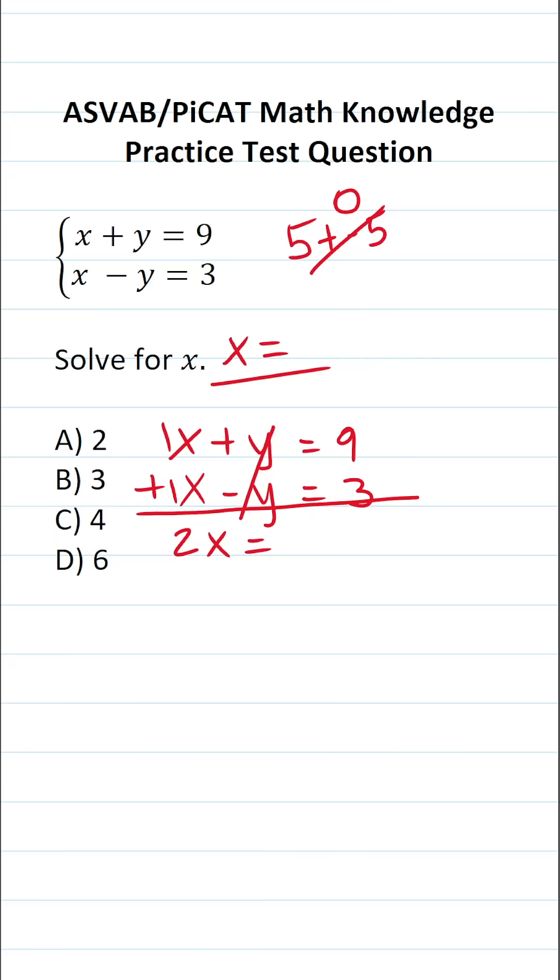All right, let's go ahead and move on here. 9 plus 3 is 12. So now we're left with 2x equals 12. And many of you can solve this mentally.